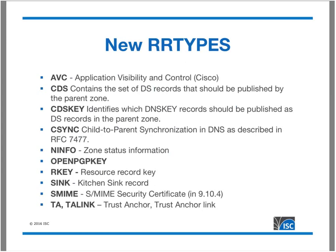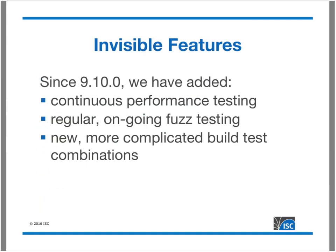We've added a list of new resource record types: we already covered CDS and CDNSKEY records for DNSSEC parent-child updating. We've also added OPENPGPKEY — exactly what it sounds like — and SMIME for another type of secure email. We add these record types as they come up periodically.